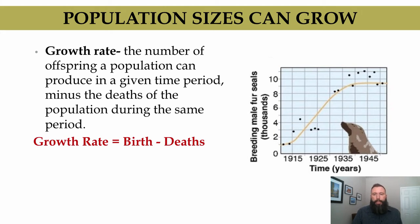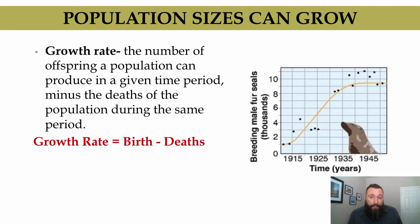Take a look at our equation. Growth rate is equal to births minus deaths. If deaths are larger than births, our growth rate can be a negative number, implying that the population size would be decreasing.